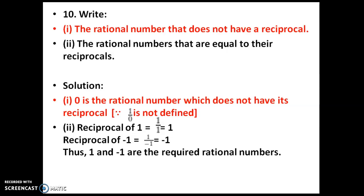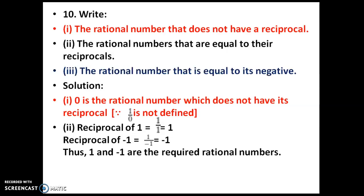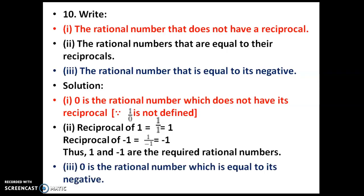The third question: which rational number is equal to its negative? The answer is 0. No other number has its positive and negative equal. Zero is the only number which is equal to its negative.